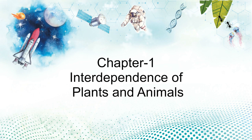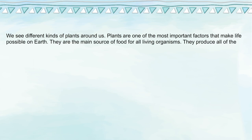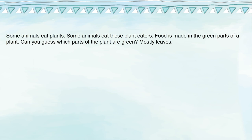Chapter one: Interdependence of Plants and Animals. We see different kinds of plants around us. Plants are one of the most important factors that make life possible on earth. They are the main source of food for all living organisms. They produce all the food that humans and animals eat. Some animals eat plants, and some animals eat these plant eaters.